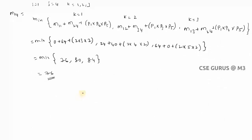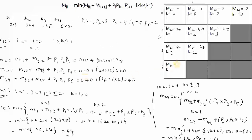For M[1,4]: i=1, j=4, k can be 1, 2, or 3. For k=1 we get 76, for k=2 we get 80, for k=3 we get 84. The minimum is 76 for k=1. So M[1,4] = 76 with k=1, which is our final answer: the minimum number of scalar multiplications is 76.